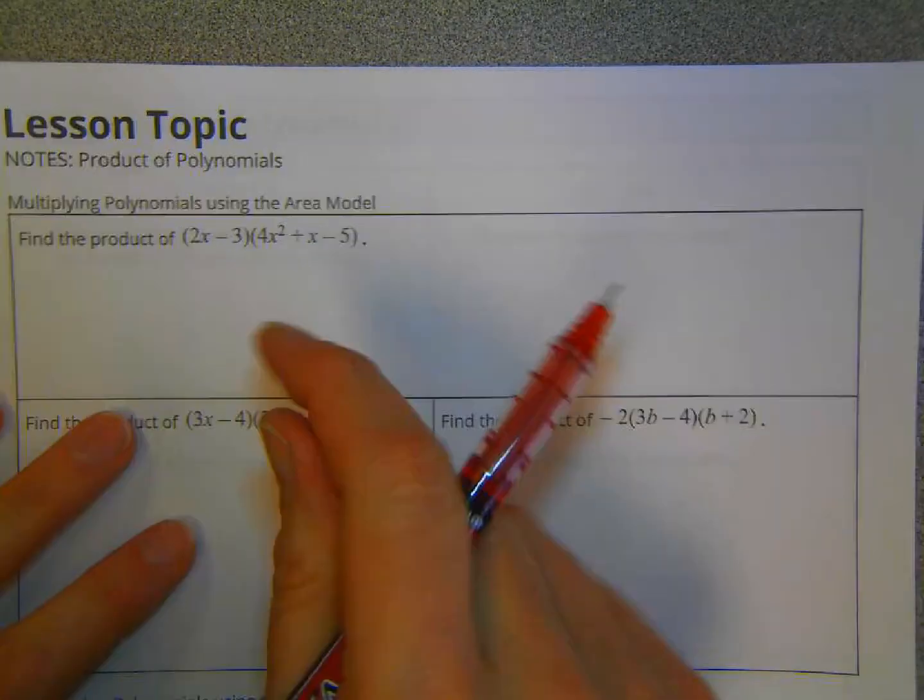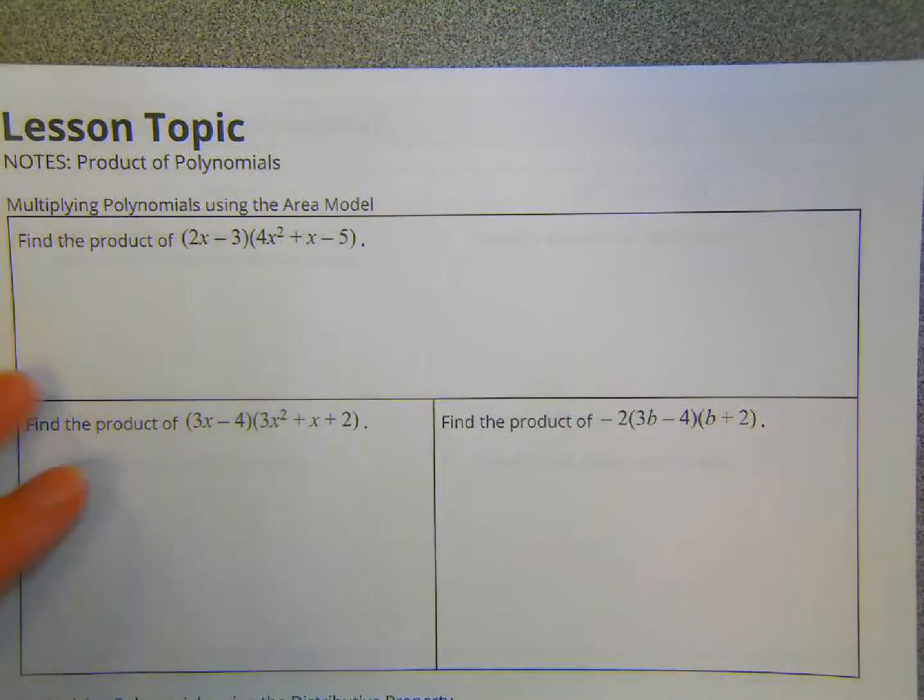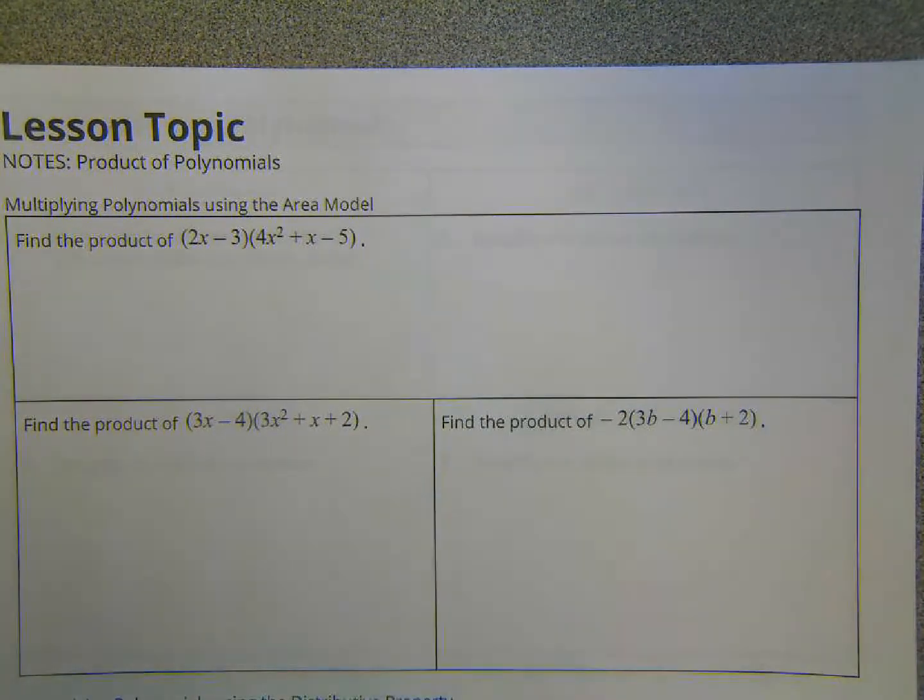Yesterday's lesson involved the distributive product of multiplying a monomial by a polynomial and doing the reverse of that, which was factoring a monomial out of a polynomial.